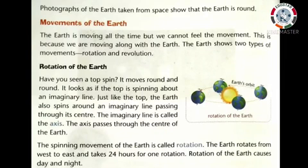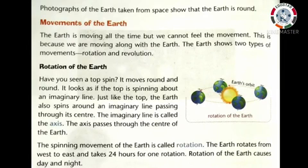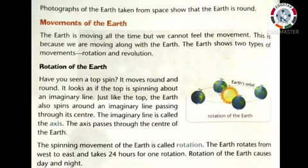Now turn to page number 94. Photographs of the Earth taken from space show that the Earth is round. The Earth is moving all the time, but we cannot feel the movement. This is because we are moving along with the Earth. The Earth shows two types of movements: rotation and revolution.